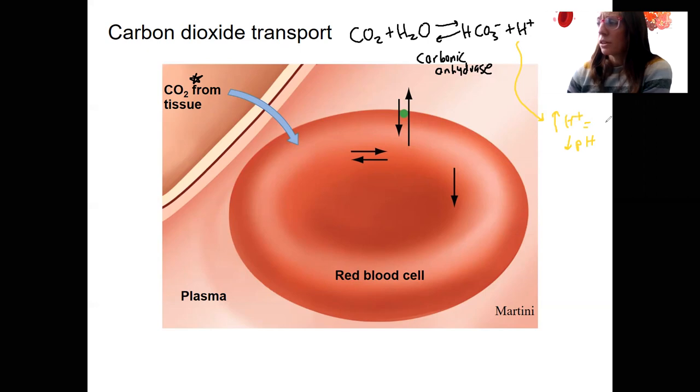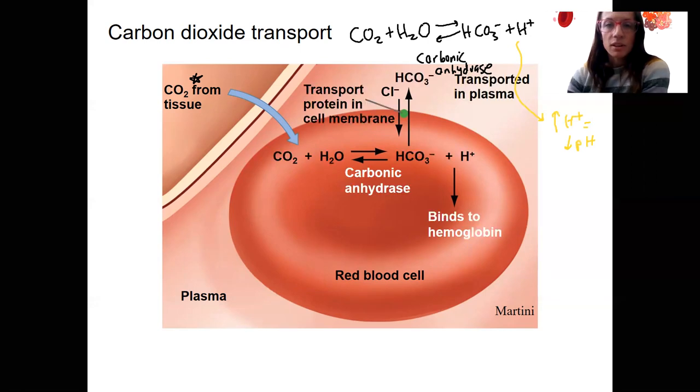Let's look at where that happens in the blood here. So this looks more complicated. Same thing, though. Carbon dioxide is unloading from the tissues, combining with water via carbonic anhydrase. This enzyme is going to be converted to bicarbonate. Bicarbonate is this one.